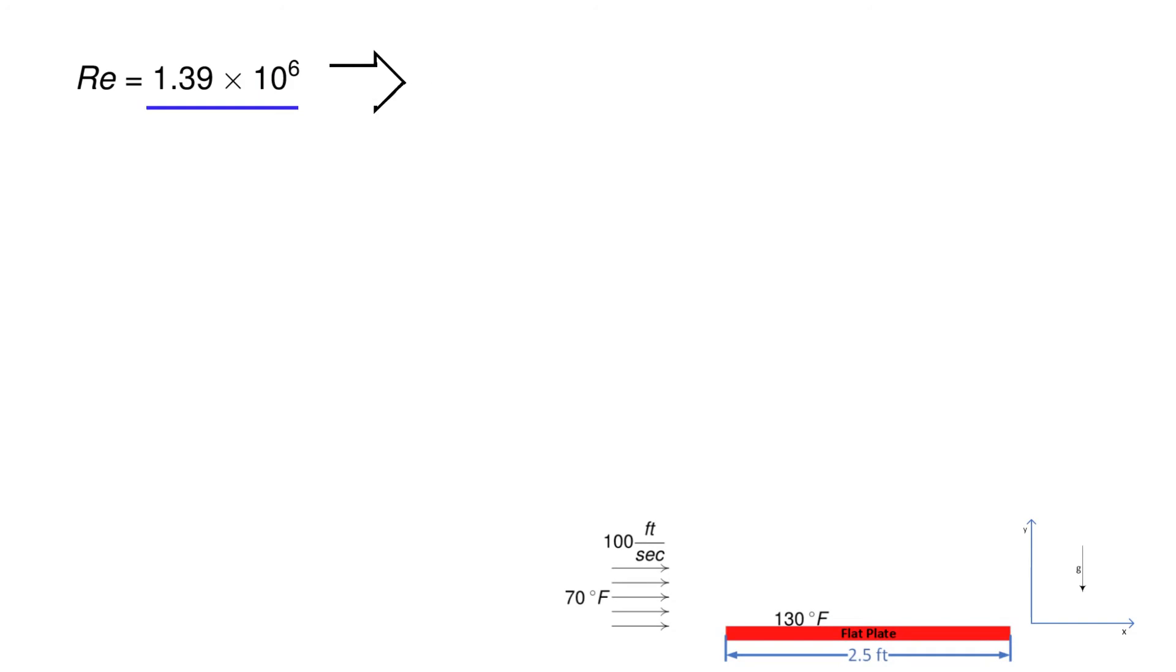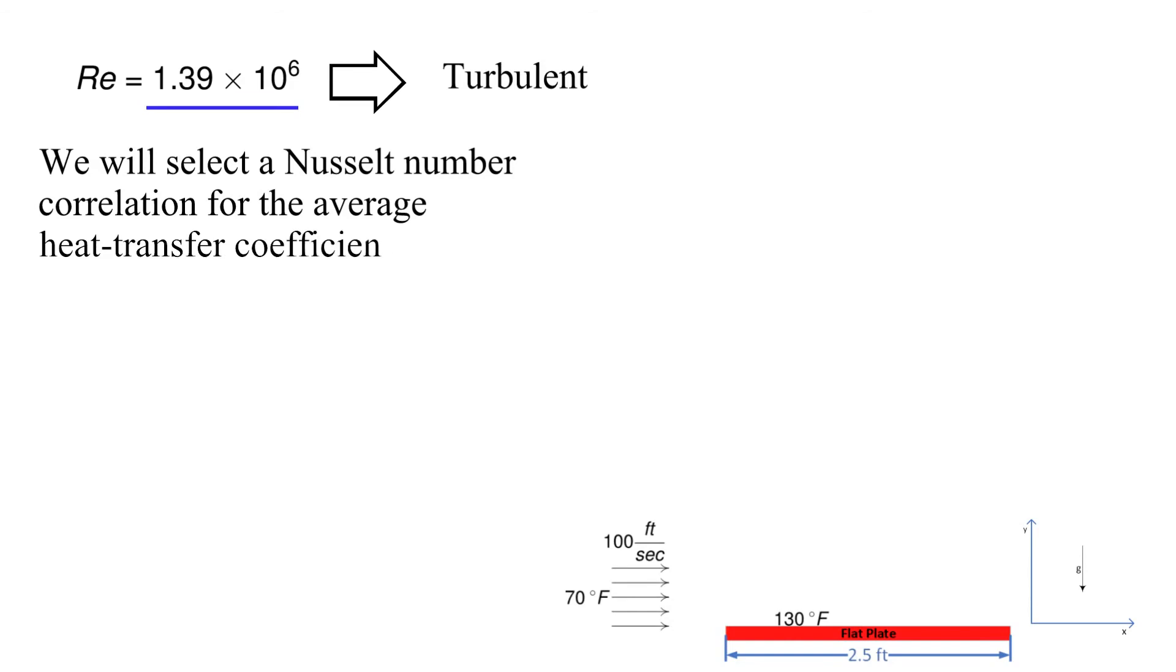In these types of convection problems, half the battle is choosing the correct correlation. There's often more than one that can be applied correctly. Unfortunately, there are also many that will be incorrect.